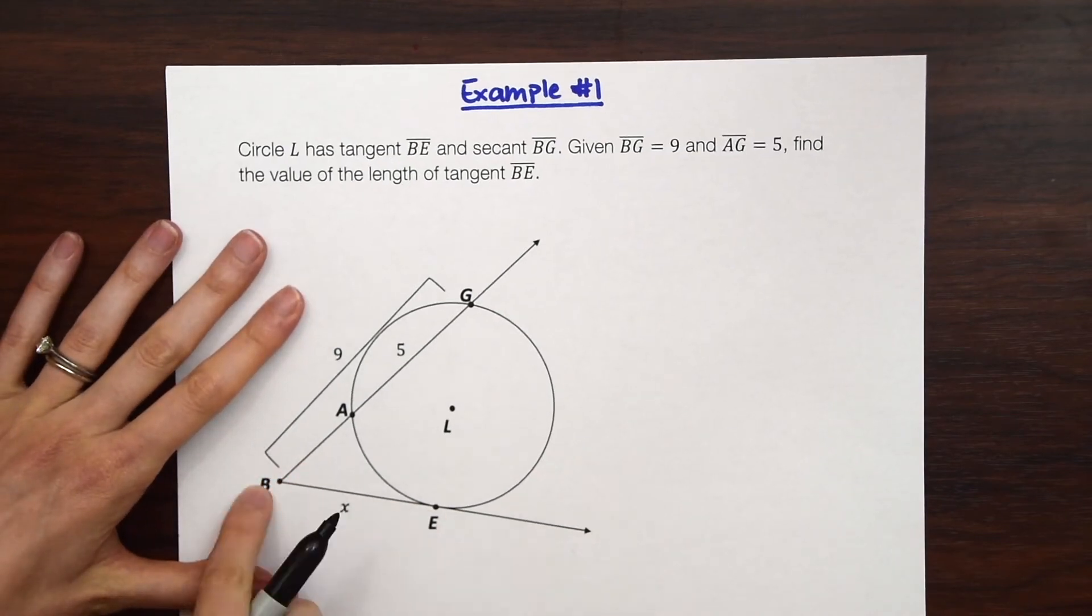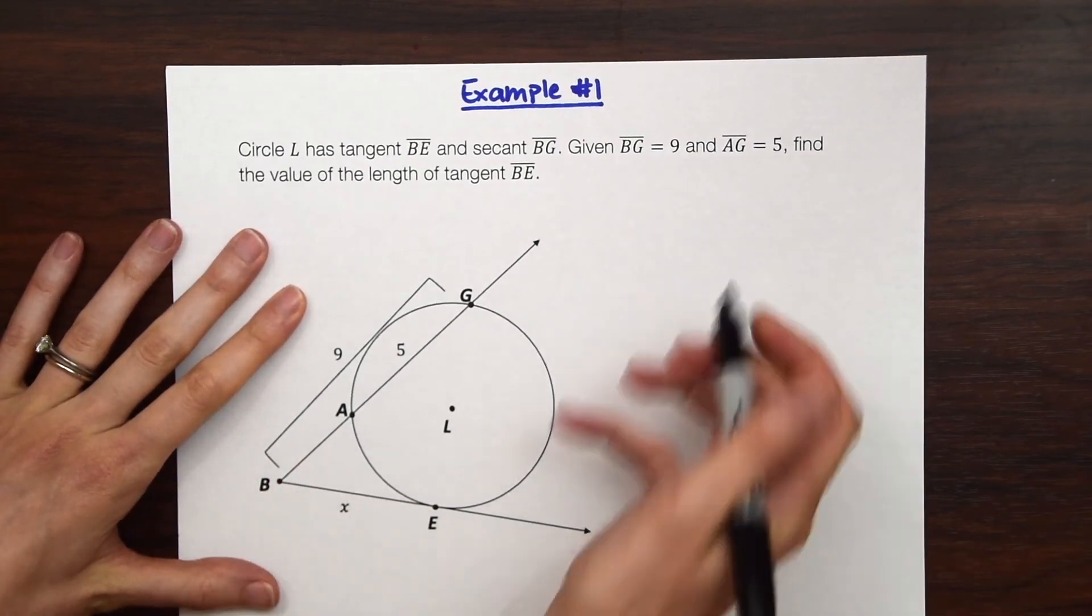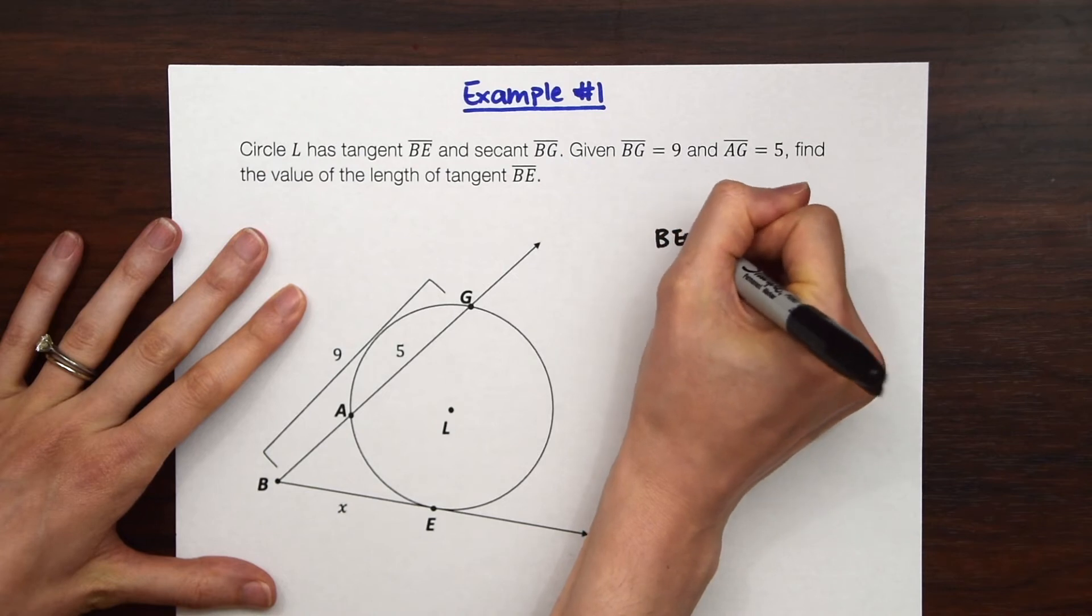So first let's write out our theorem. Remember it's the tangent, it's always a tangent first. BE squared which is BE.